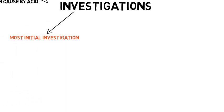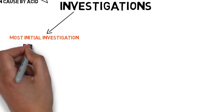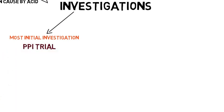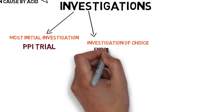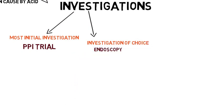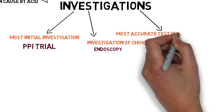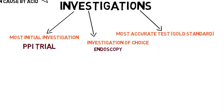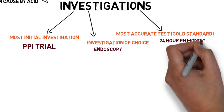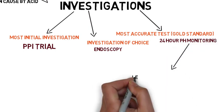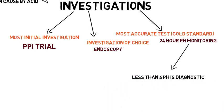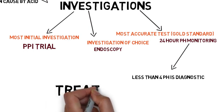Number one, the most initial investigation to be done in GERD is proton pump inhibitor trial. This is the most initial. The second investigation, which is considered an investigation of choice, is endoscopy. The third investigation, which is considered most accurate or gold standard, is 24-hour pH monitoring. In this 24-hour pH monitoring, a pH of less than 4 is considered diagnostic of GERD.